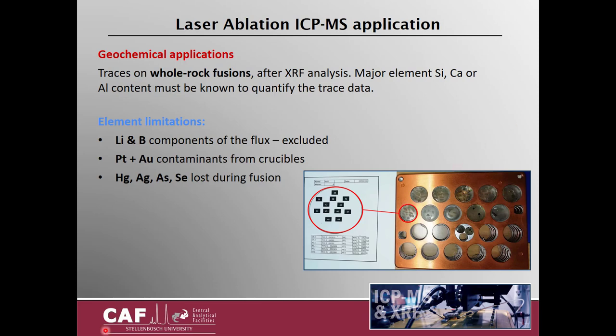There are some limitations to the elements that can be measured. Lithium and boron are components of the flux so they have to be excluded. Platinum and gold are often contaminants from the crucibles when fusing the samples. Volatile elements such as mercury, silver, arsenic, and selenium are usually lost during fusion.